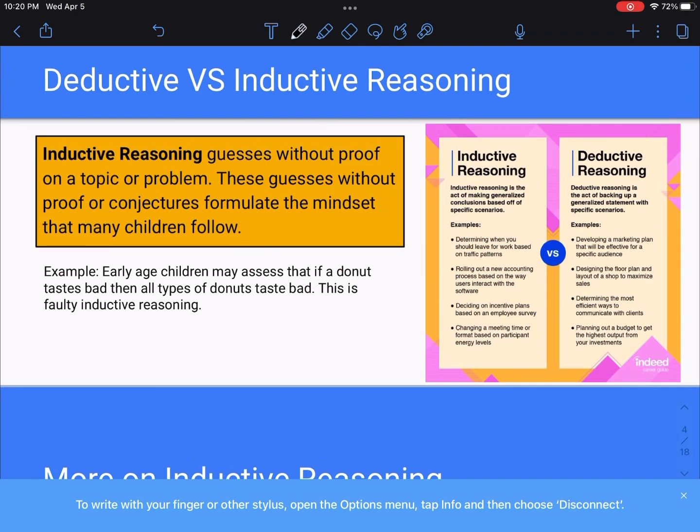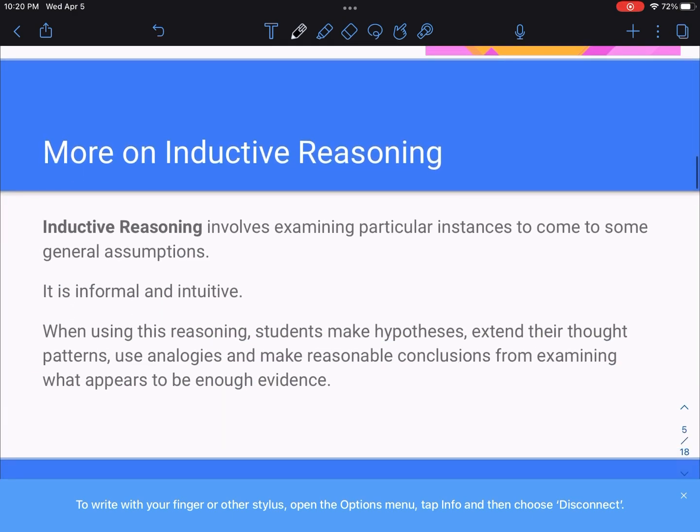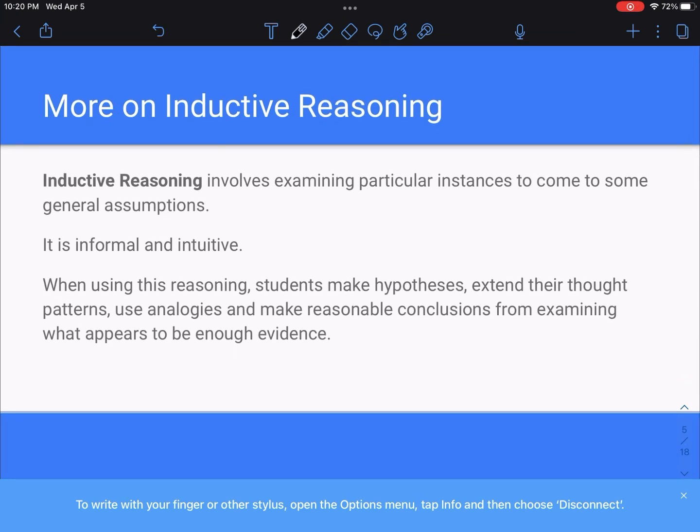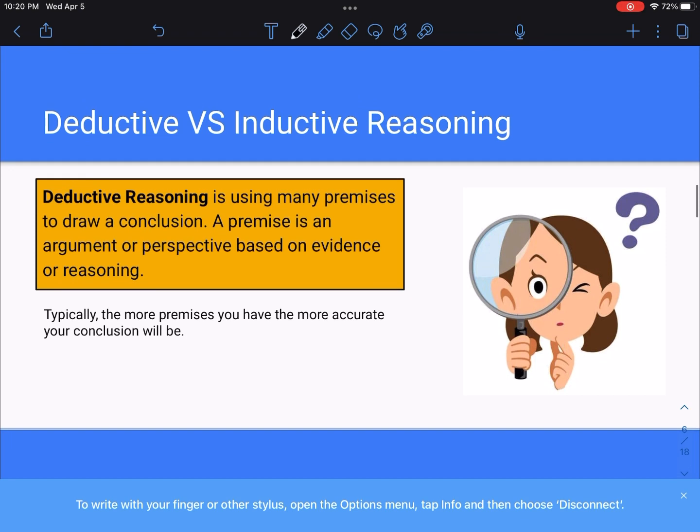Let's talk about inductive reasoning. Inductive reasoning involves examining particular instances to come to some general assumptions. It is informal and intuitive, and when using this reasoning, students make hypotheses, they extend their thought patterns, they use analogies, and they make reasonable conclusions from examining what appears to be enough evidence. For deductive reasoning, when you use this thought process you're using many premises to draw a conclusion. Now a premise is an argument or perspective based on evidence or reasoning. Typically the more premises you have, the more accurate your conclusion is going to be.